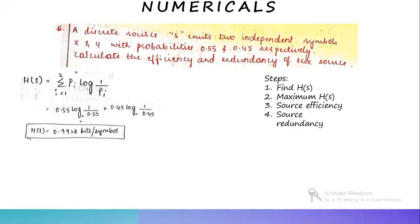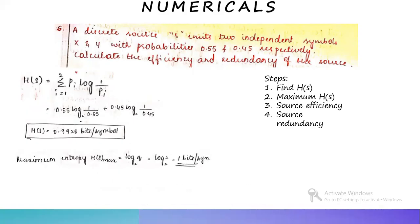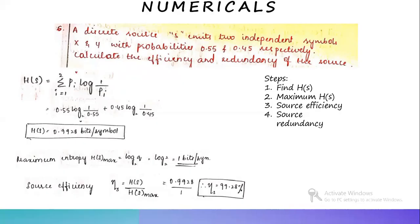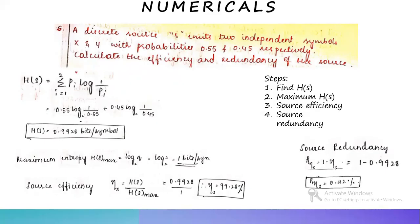Maximum entropy H of S max equals log q base 2, where q is the number of symbols. Here q equals 2, so H of S max equals log 2 base 2 equals 1 bit. Source efficiency eta-s equals H of S divided by H of S max equals 0.9928 divided by 1, so eta-s equals 99.28%. Source redundancy r-eta-s equals 1 minus eta-s equals 0.72%.